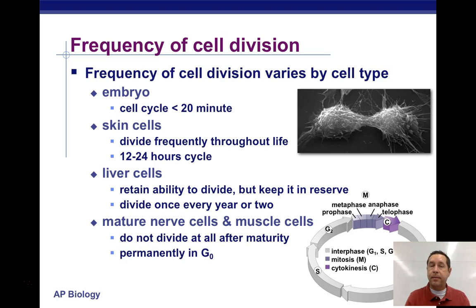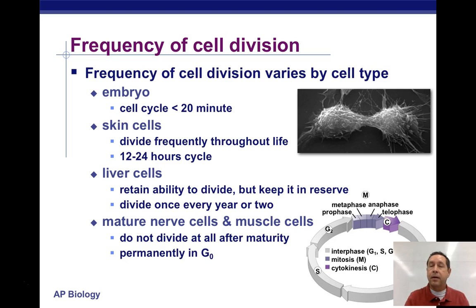Some cells in the body of humans don't divide at all. Nerve cells and muscle cells, once they're formed, don't divide after they reach maturity. They go into what we call G0, this resting phase, permanently.